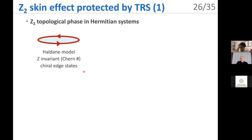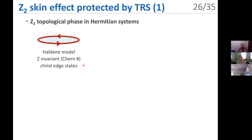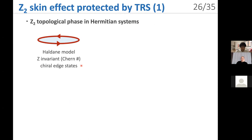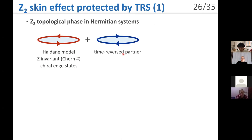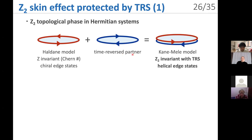To investigate symmetry-protected skin effects, we revisit symmetry-protected topological phases in Hermitian systems. We begin with the Chern insulator, such as the Haldane model. It is characterized by the non-trivial Chern number and hosts chiral edge states. Consider its time-reversal partner — the chiral edge states move in the opposite direction. Combining these two systems gives exactly the Kane-Mele model, characterized by the Z₂ invariant. This is a Z₂ topological phase protected by time-reversal symmetry.